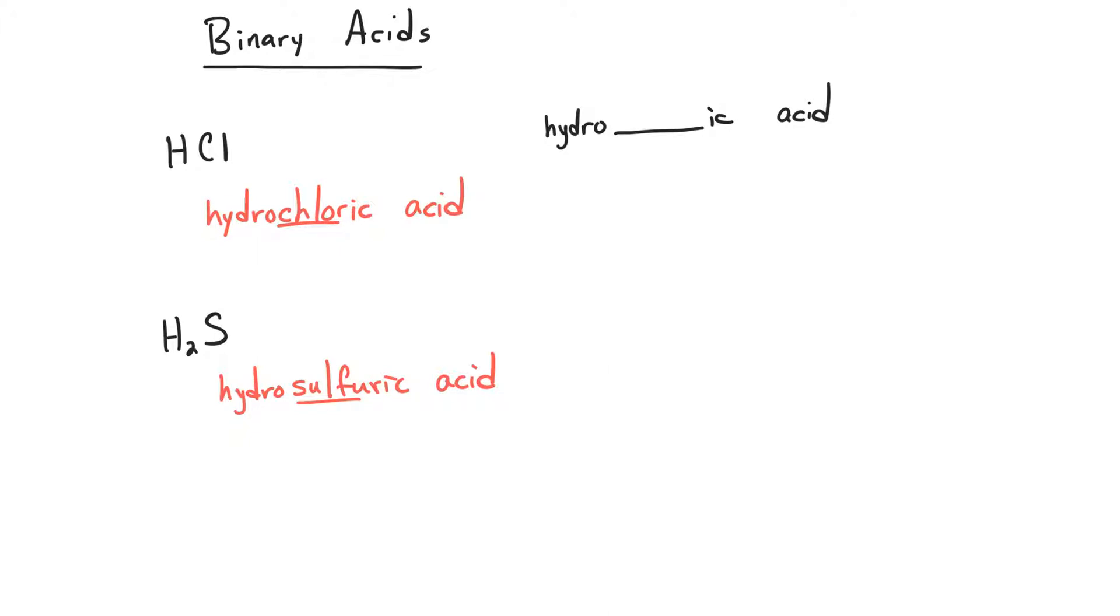There are a limited number of binary acids. These are mostly going to be elements from group 7: HF, HCl, HBr, HI, and so forth.